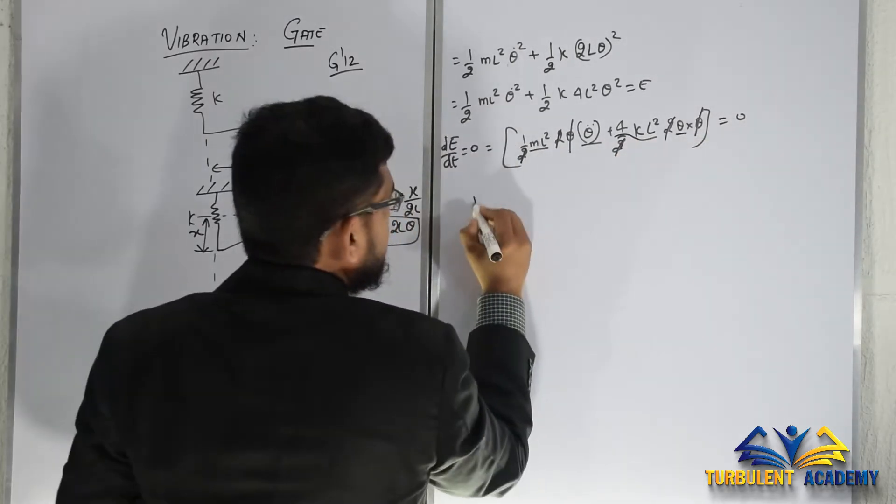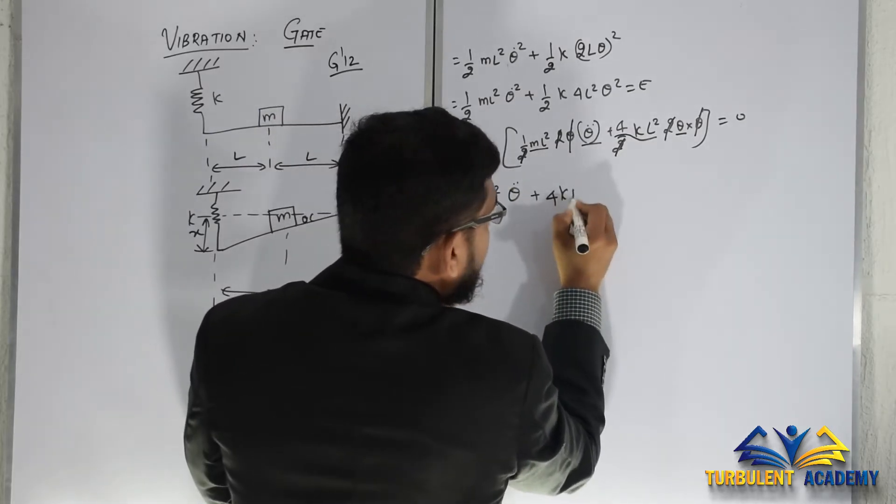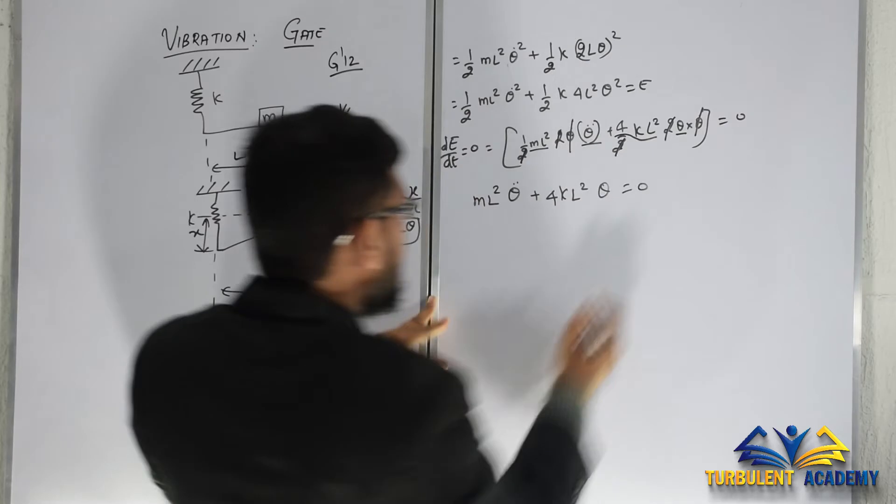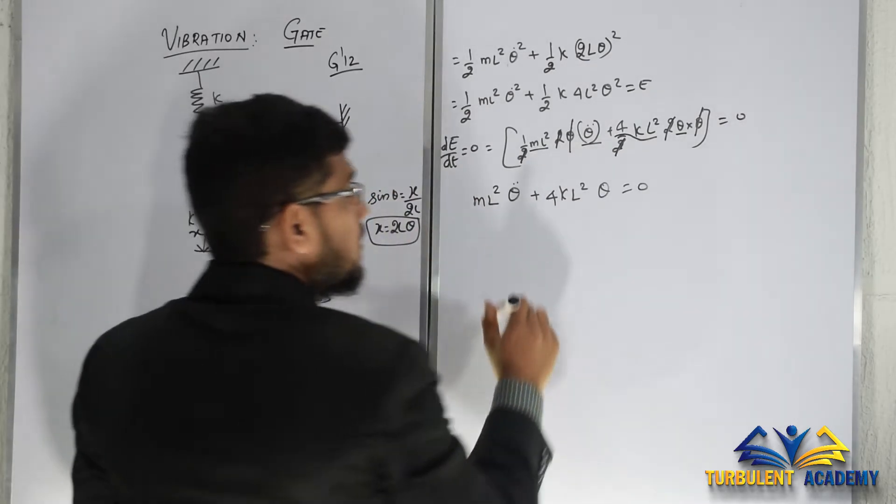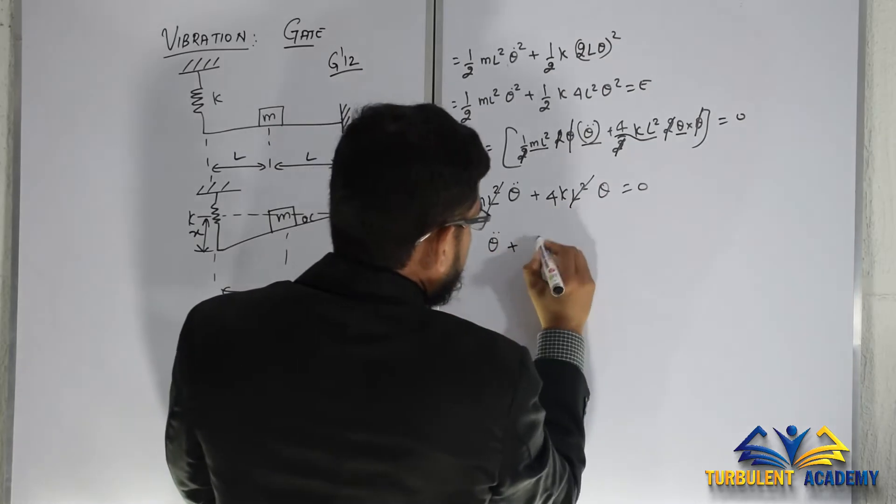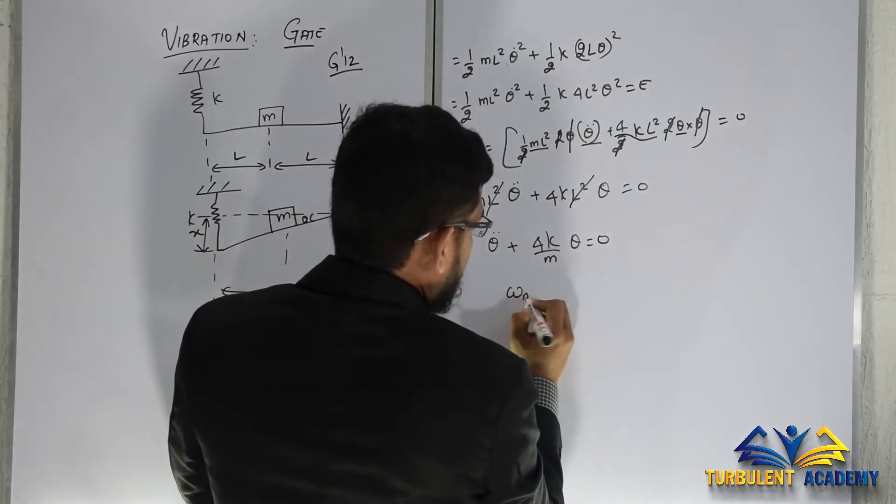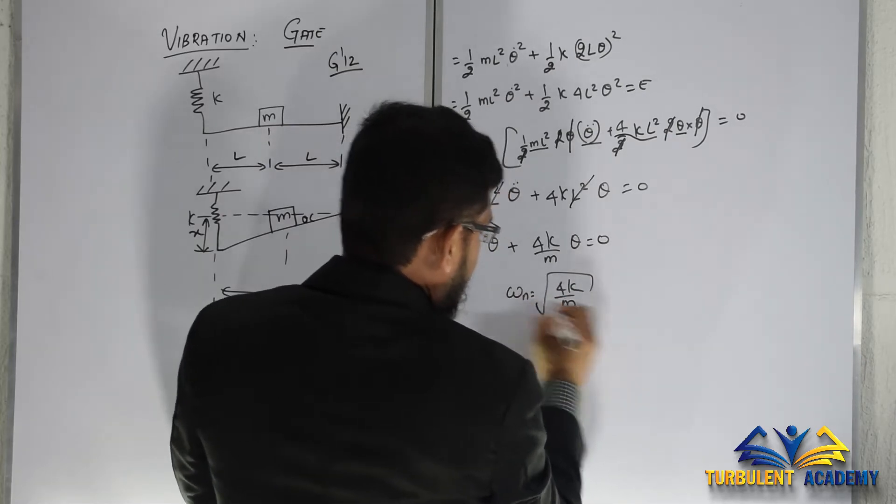ml squared theta double dot plus 4kl squared theta equals 0. We have one more thing to cancel, l squared and l squared. So theta double dot plus 4k by m theta equals 0. Omega n is going to be square root of 4k by m.